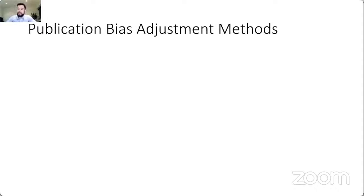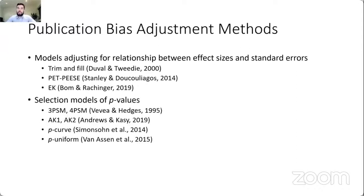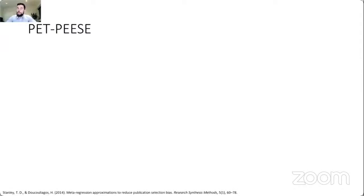Publication bias adjustment has been a topic for many decades, with different methods developed. I differentiate them into two camps. One camp adjusts for the relationship between standard errors and effect sizes — for example, trim-and-fill, WLS-PEESE, or Egger's test. The second group consists of selection models based on p-values that try to adjust for publication bias operating on p-values — for example, 3PSM, 4PSM, AK2, p-curve, and p-uniform.